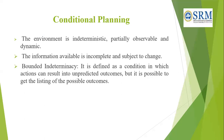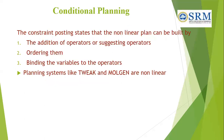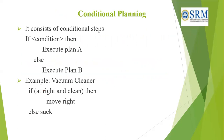Conditional planning is also referred to as contingency planning — it is a planning approach that can handle various contingencies that can arise. These planners belong to the category of non-deterministic domains where dependency lies on parameters other than the current state. A conditional planning system can be built by addition of operators, ordering them, and binding the variables to the operators. Examples of conditional planning systems include TWEAK and MOLGEN. It consists of conditional steps: if a condition is true, then execute plan A, else execute plan B. For example, a vacuum cleaner: if at right and under clean, then move right, else suck.